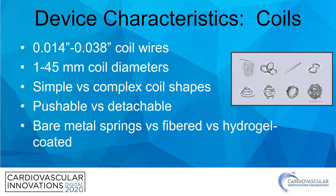Now let's talk about our devices, starting with coils first. There are a variety of coil platforms on the market. Coils can be made up of 0.014 inch wire all the way up to 0.038 inch wire, and the coil diameters themselves can be as small as one millimeter and as large as 45 millimeters. The shapes can be simple or complex varieties, as shown on the right.